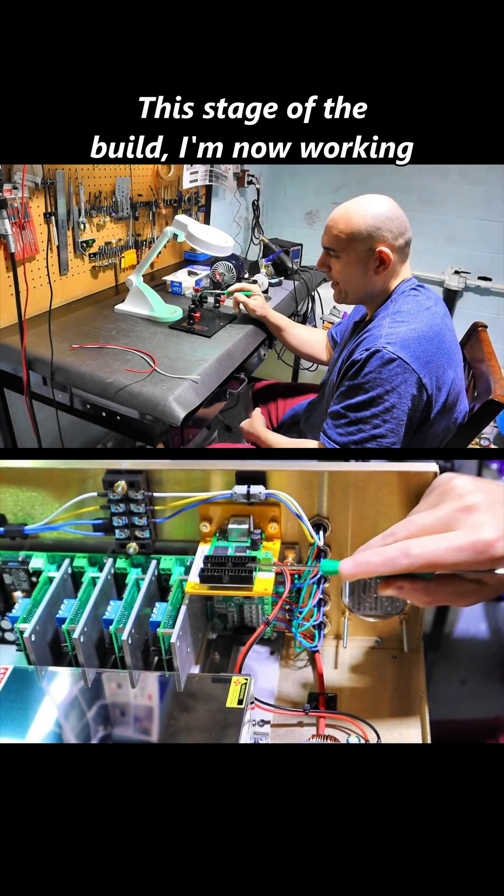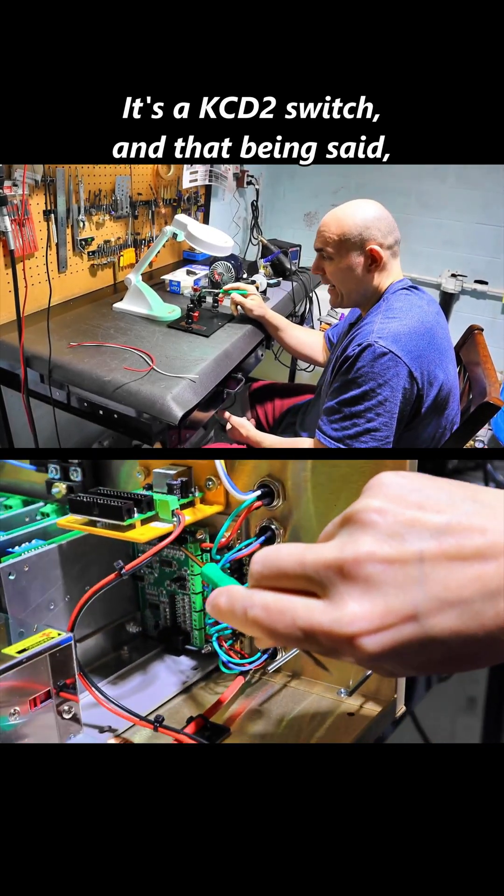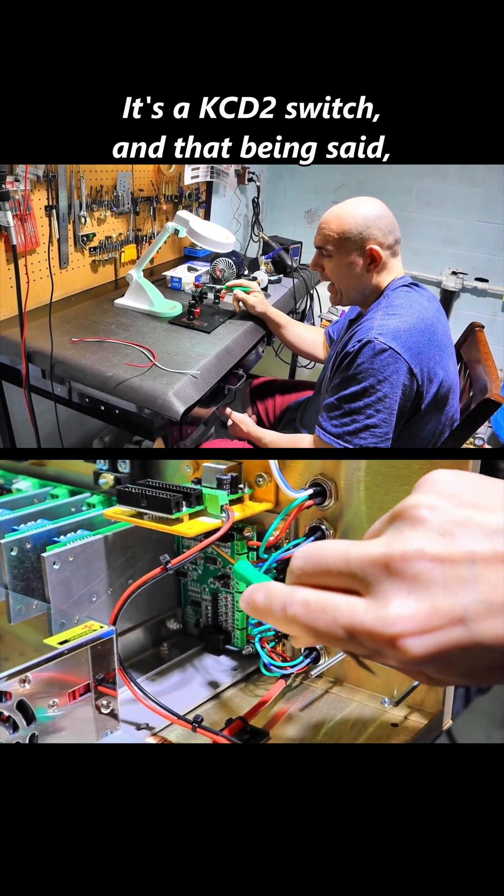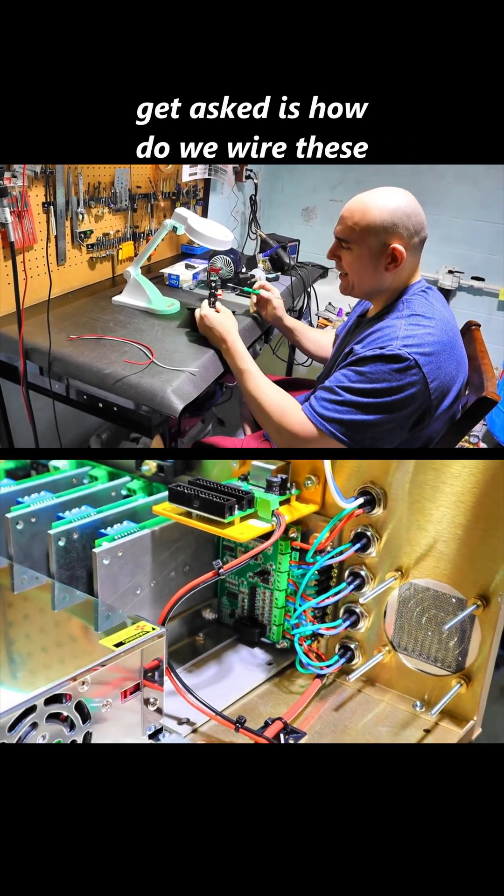At this stage of the build, I'm now working with my power switch for cycling the unit on and off. It's a KCD2 switch, and one of the biggest questions I always get asked is how do we wire these switches.